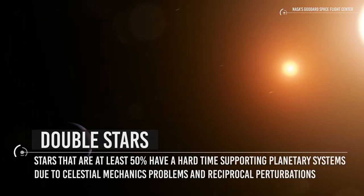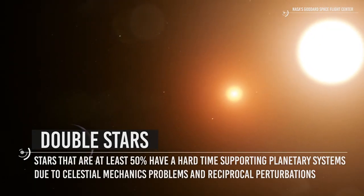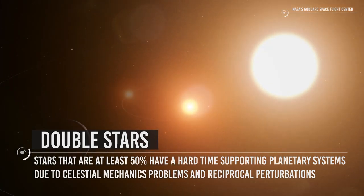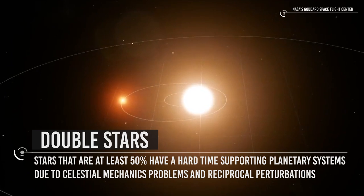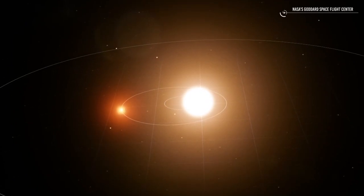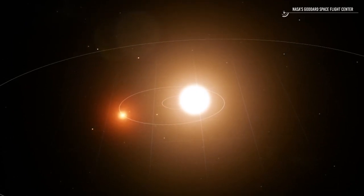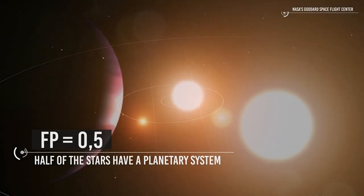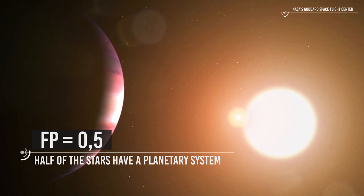However, double stars that are at least 50 percent have a hard time supporting planetary systems due to celestial mechanic problems and reciprocal perturbations. But we can also be optimistic because then other factors will rule out double or multiple systems. Fp could be assumed equal to 0.5, i.e. half of the stars have a planetary system.